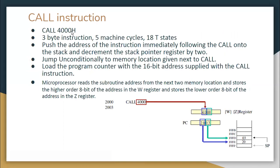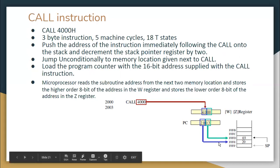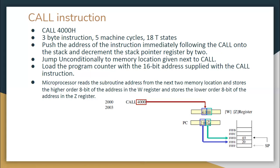The CALL instruction requires five machine cycles and 18 T-states because it does many things: it pushes the next instruction's address onto the stack and decrements the stack pointer register by two. For example, CALL to some memory location: first it pushes the address of the instruction immediately following the CALL onto the stack, decrements the stack pointer by two, and then loads the program counter with the subroutine's address.